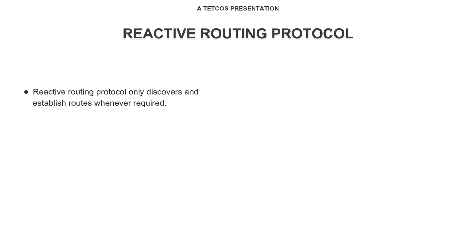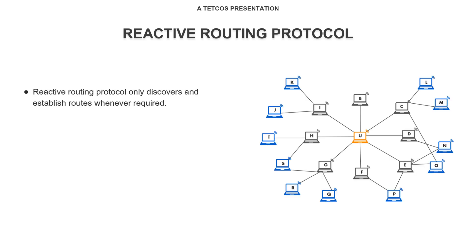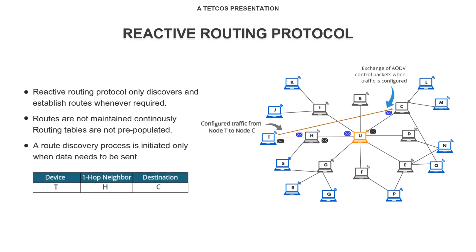In contrast, reactive routing protocols only discover and establish routes when they are required for communication. They do not maintain routing tables or exchange routing information continuously. Instead, when a node needs to send data, a route discovery process is initiated to find the desired path.